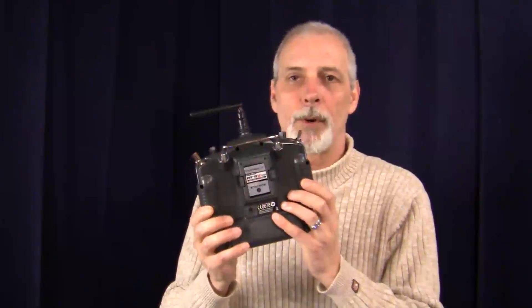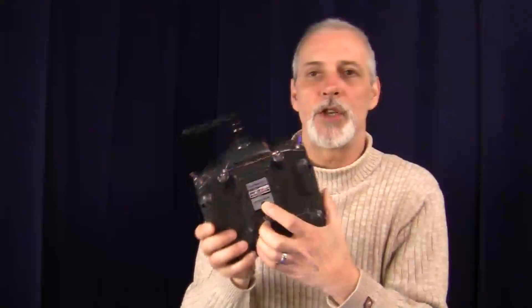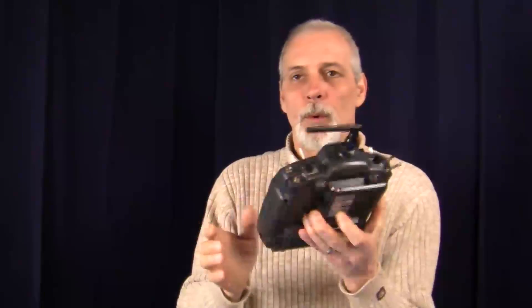Now we'll take the transmitter and before we turn it on, we want to put our finger on the button at the back that is identified as bind range test and push that button. While we're pushing the button, we will simply turn on the transmitter. Like that.